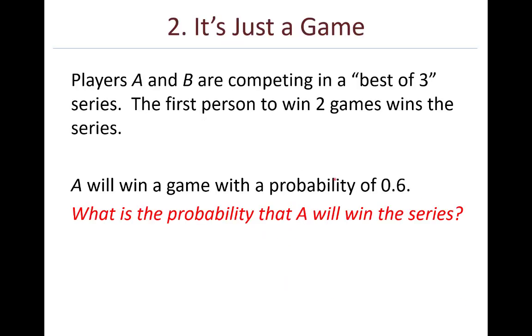Moving on. Example number two, it's just a game. Here are some examples of games that we will see in this course. Imagine players A and B are competing in a best of three series. The first person to win two games wins the series. So there are a series of games that are being played. And maybe A wins the first game, and then B wins the second game, so they're all tied up. And then if A wins the third game, A wins the series because A had two games.